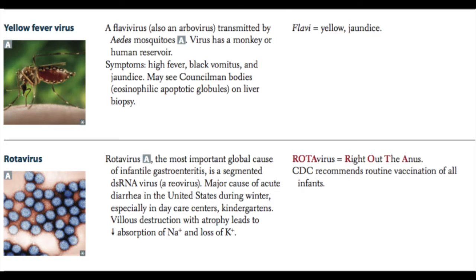Yellow fever virus is a flavivirus and an arbovirus transmitted by Aedes mosquitoes. The virus has a monkey or human reservoir. Symptoms of yellow fever include high fever, black vomitus, and jaundice. You can also see Councilman bodies with pathologic stains because of acidophilic inclusions in liver staining. Remember: flavivirus translates to yellow — flavivirus, yellow fever virus.